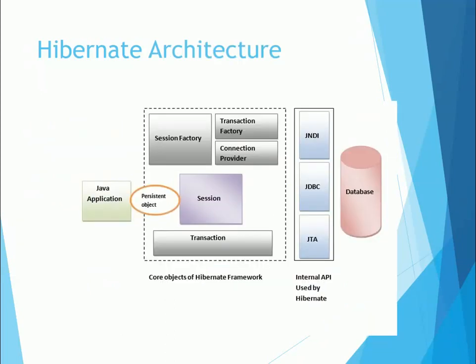Here is the Hibernate framework architecture, in which we have session factories, sessions, and transactions — all these are persistent objects and we are going to use all these objects in our upcoming tutorials. Then we have three internal APIs used by Hibernate: JNDI, JDBC, and JTA. In this tutorial series we will use JDBC.